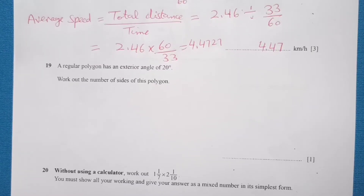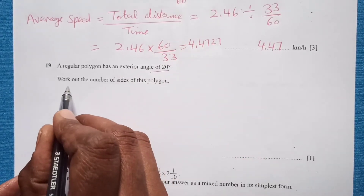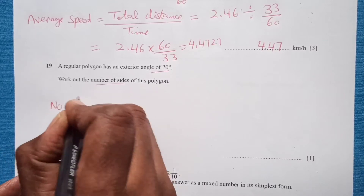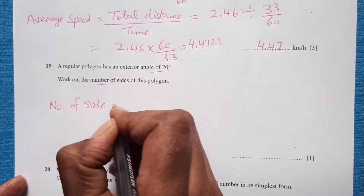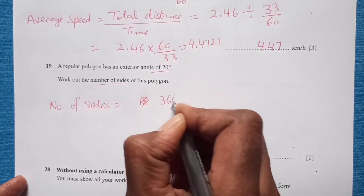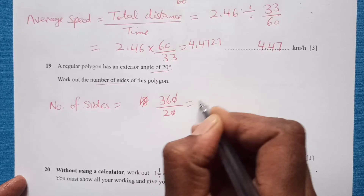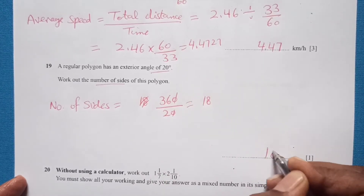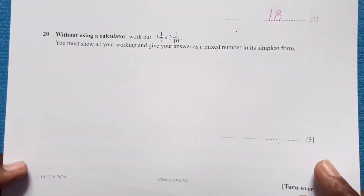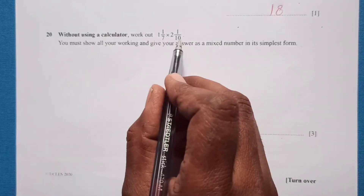Question 19: A regular polygon has an exterior angle of 20 degrees. To find the number of sides, divide 360 by the exterior angle: 360 divided by 20 equals 18. So the number of sides is 18.